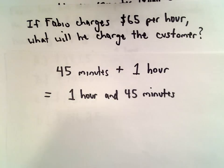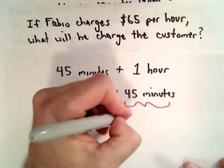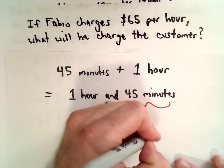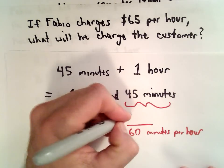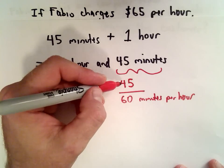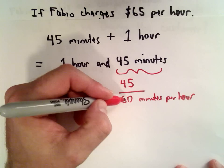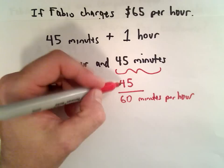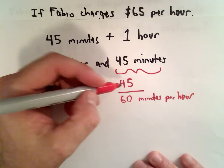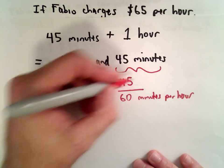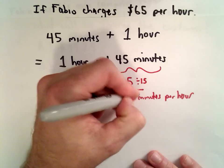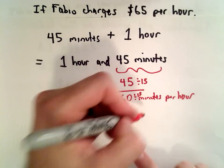One hour stays as one hour. Now let's convert 45 minutes: 45 minutes divided by 60 minutes per hour. We can reduce this fraction — the largest number that goes into both 45 and 60 is 15. So 45 divided by 15 is 3, and 60 divided by 15 is 4. Therefore, 45 minutes is the same as 3/4 of an hour.